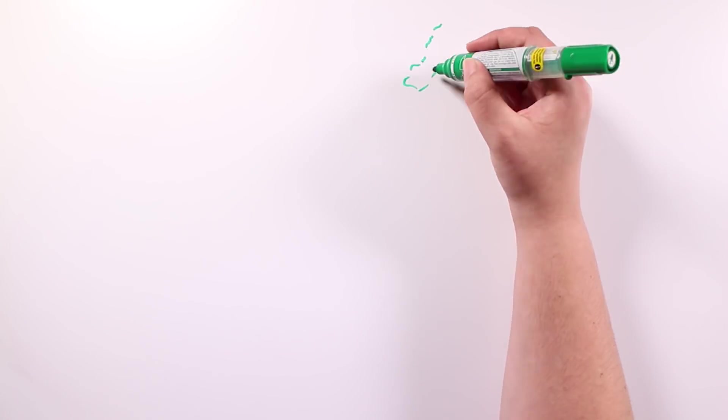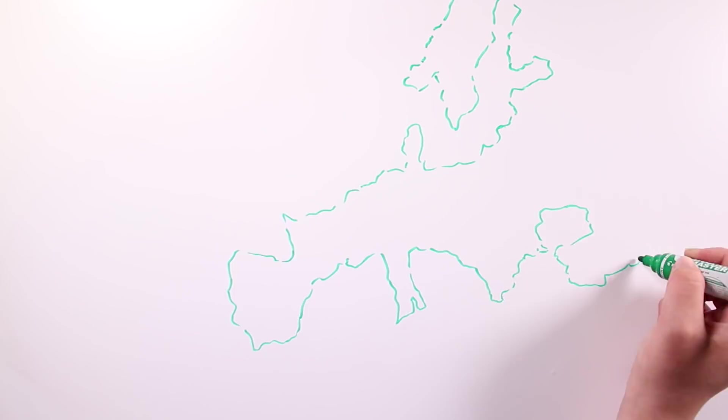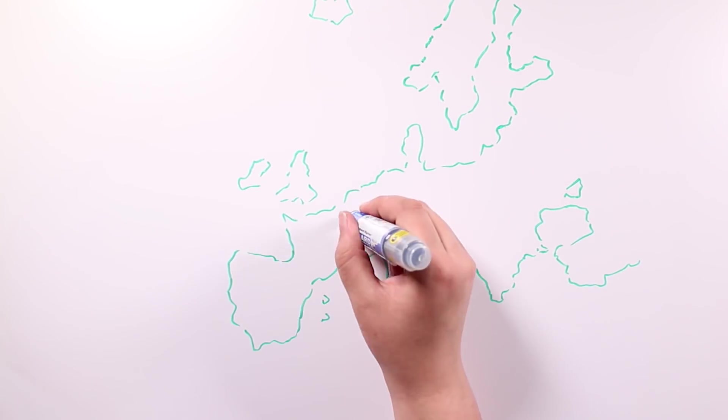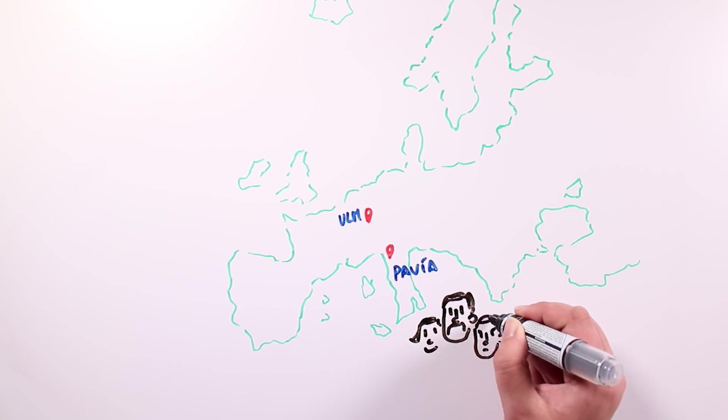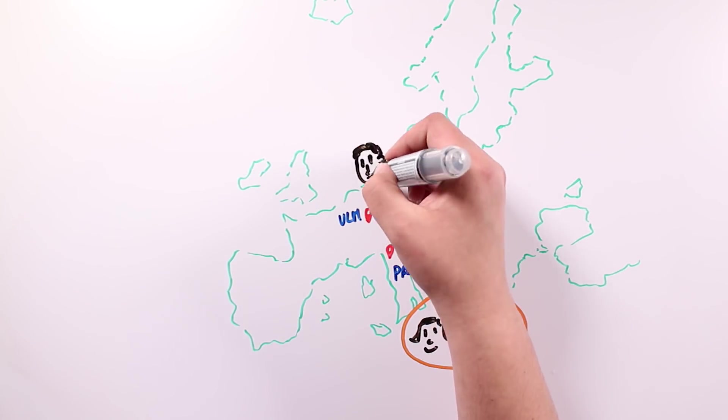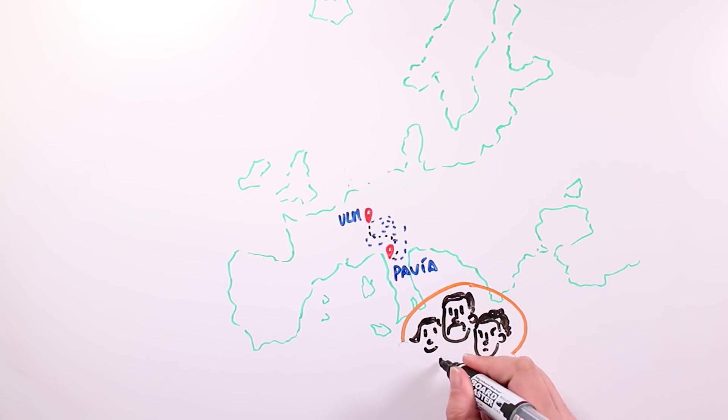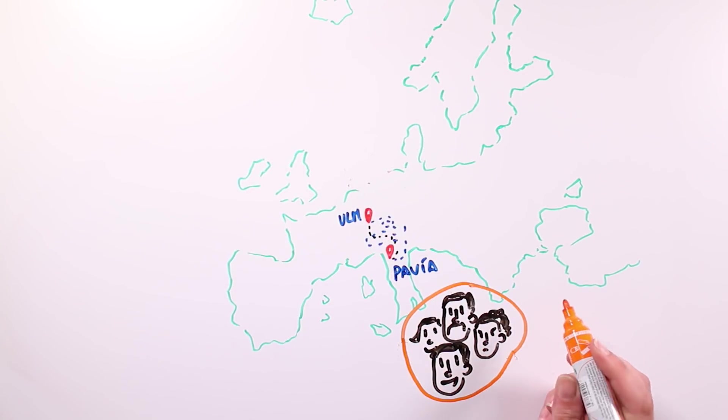In 1894, the family business had to close down, and his family had to move to Pavia, in Italy, but without Albert, who still had to finish his studies. But this separation didn't last for long, as Albert managed to get a medical certificate that allowed him to leave his school and get back with his family again.